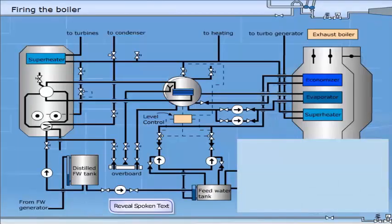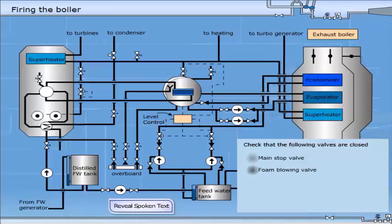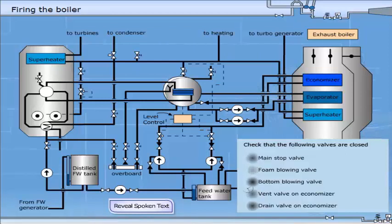We assume that the boiler has been out of operation for a while and that no major maintenance work has been done. Check that the following valves are closed: main stop valve, foam blowing valve, bottom blowing valve, vent valve on economiser, drain valve on economiser.